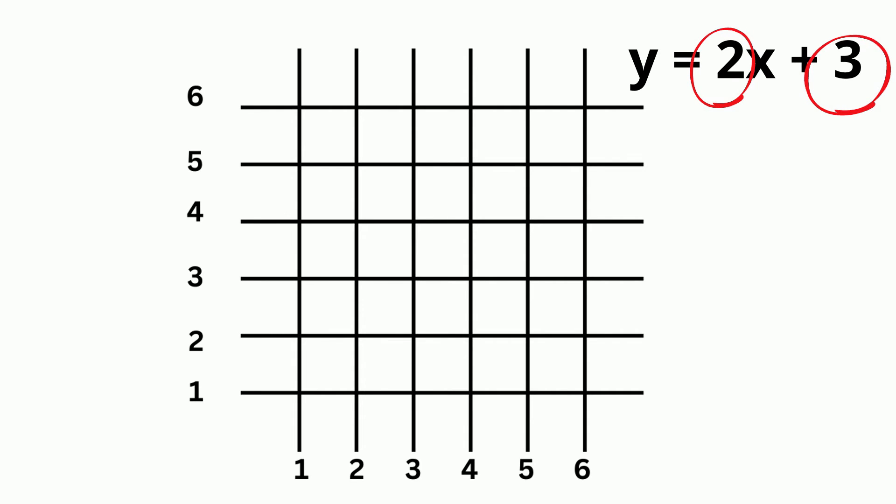You always start graphing using b. So this line crosses the y-axis at 3 and the slope is 2. This means that for every 2 units the line goes up, it goes to the right 1 unit.